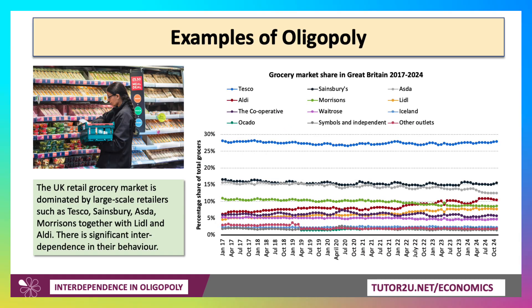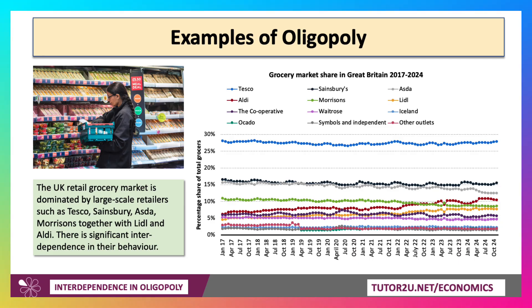A good example of oligopoly is the retail grocery market in the UK, dominated by the big players such as Tesco, Sainsbury's, Asda, Morrison's, and of course increasingly now by the likes of Aldi and Lidl, the deep discounters from Germany. Obviously there are lots of smaller independent shops, Waitrose, Iceland and others, but it is an oligopoly.